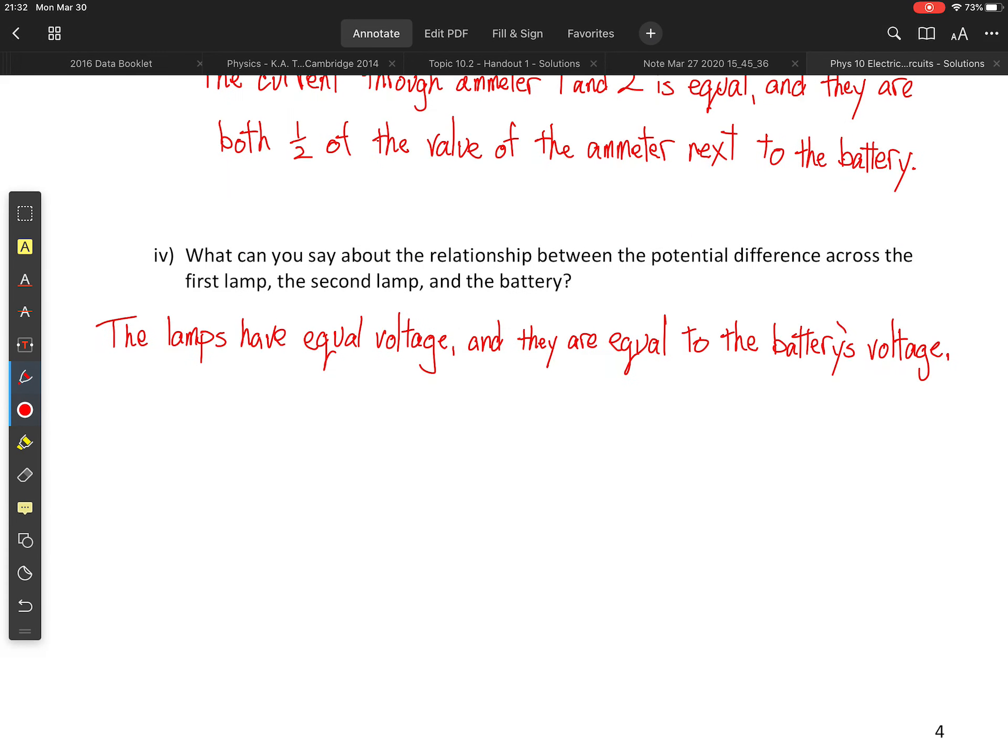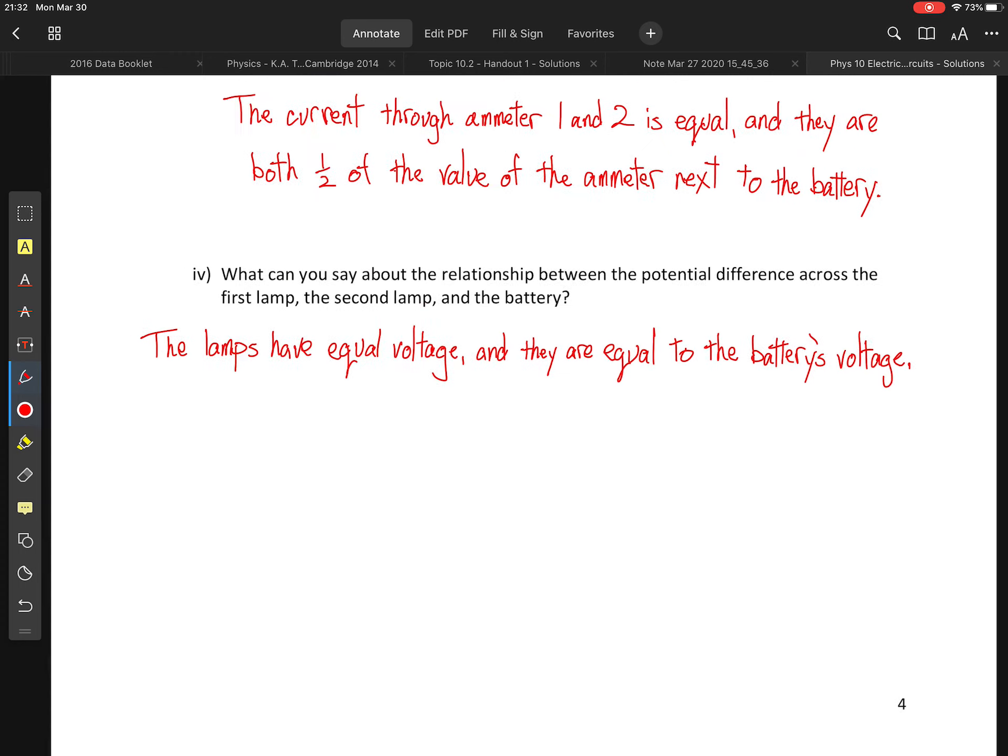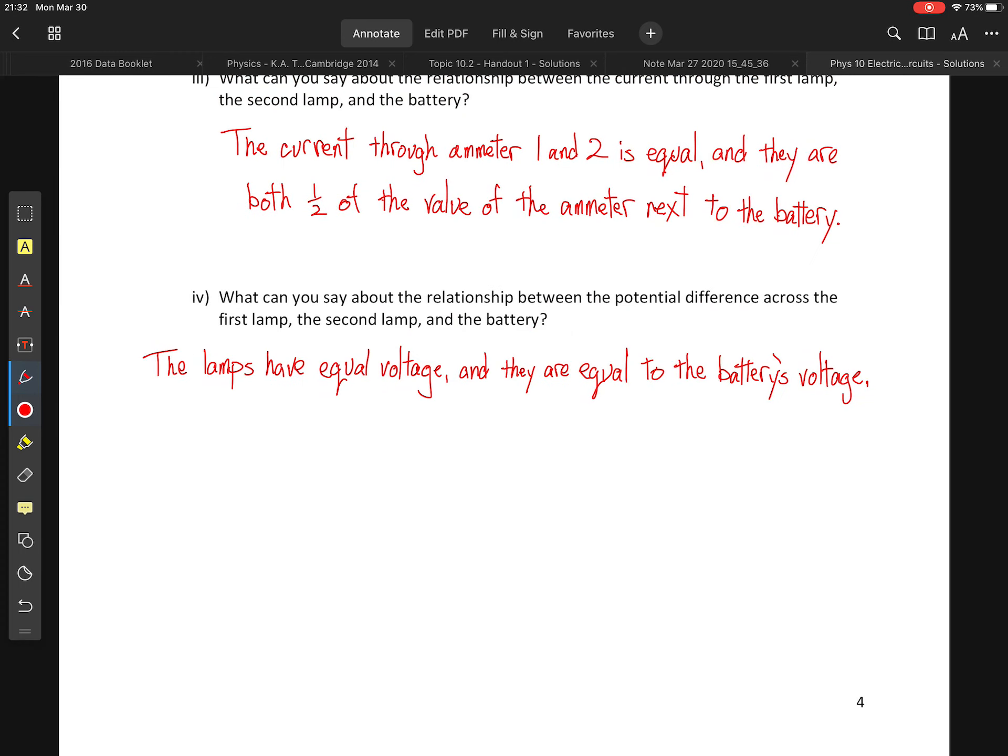Okay, what can you say about the relationship between the potential difference across the first lamp, the second lamp, and the battery? These lamps will have equal voltage, and they should be equal to the battery's voltage, or maybe slightly less. Again, depending on how much resistance you gave your wires in the simulation, where your wires would consume a little bit of that voltage, but not very much.